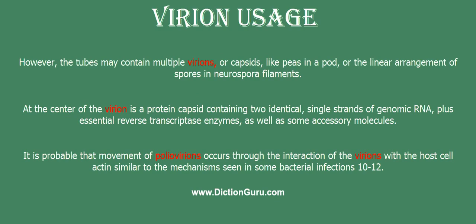However, the tubes may contain multiple varians, or capsids, like peas in a pod, or the linear arrangement of spores in Neurospora filaments.